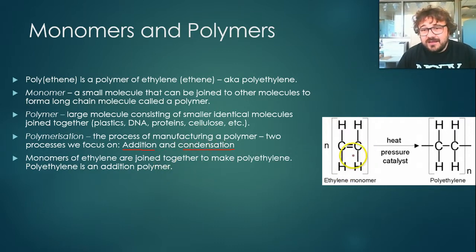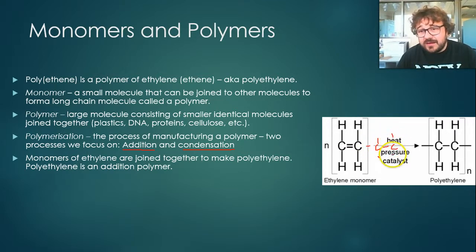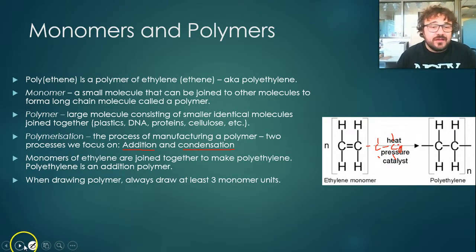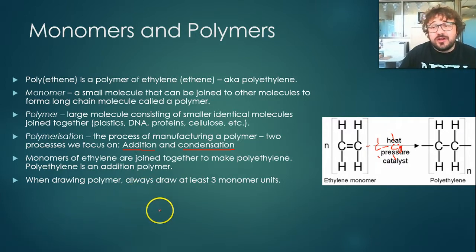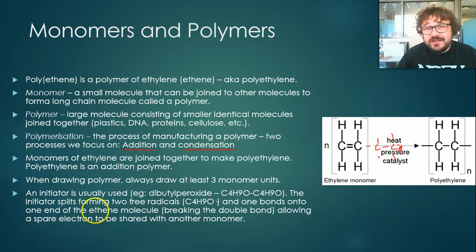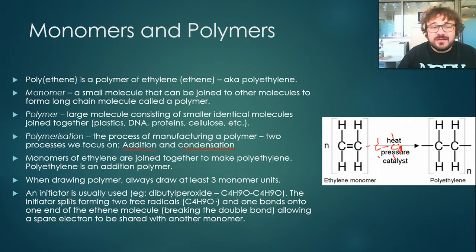In addition polymerization, we've got the ethylene and we just add one together — it breaks the double bond, which gives you the C-C bond, and you've got a free radical on the end of the polyethylene chain until it's terminated. When drawing a polymer, always draw at least three monomer units. Initiators are usually used — dibutyl peroxide is really common, and peroxides in general tend to be the ones we use as initiators.